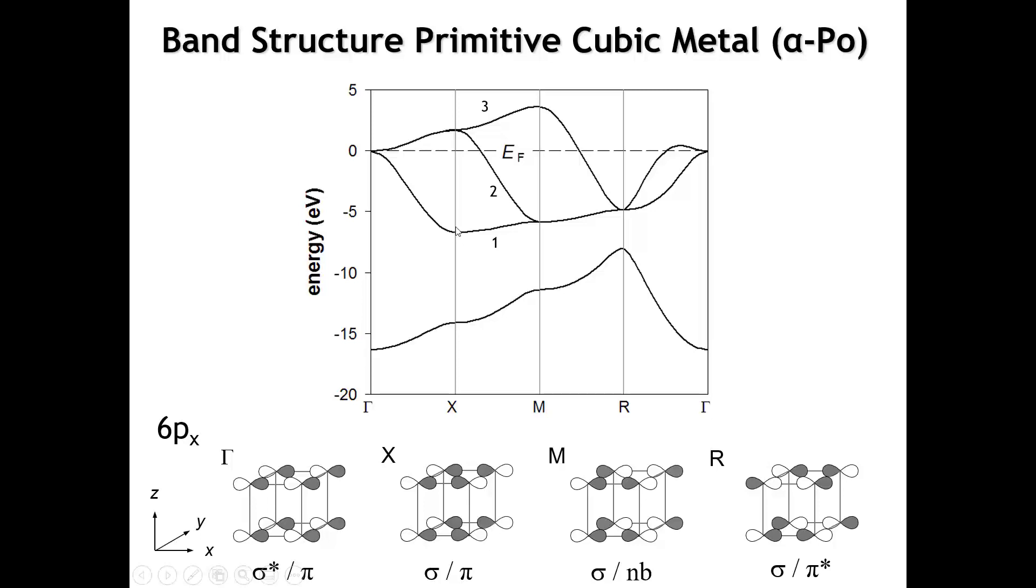It makes sense that this 6px band would be high in energy at gamma and relatively low at the other k points. But what is responsible for the fact that it's lowest at X and then goes uphill when we go to M and then uphill again a little bit when we go to R? To understand that, we need to think of the weaker pi interactions between these 6p orbitals. At both gamma and X, the pi interactions with the four neighbors are bonding. But when we go to M, along the z direction the pi interaction is still bonding, but along the y direction the pi interaction is now anti-bonding. So the net would be a non-bonding state. When we get to R, the pi interactions in both directions perpendicular to the 6px orbital are anti-bonding. That's responsible for this subtle rise of the 6px band from X to M to R.